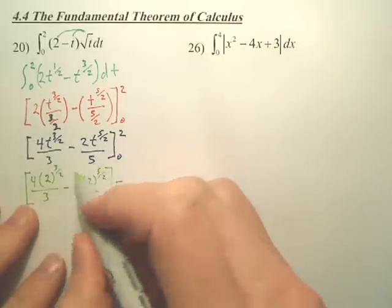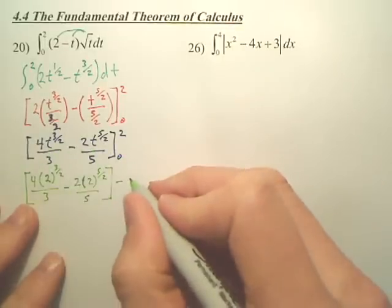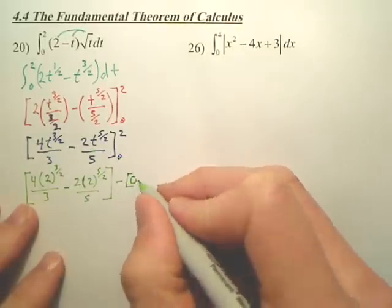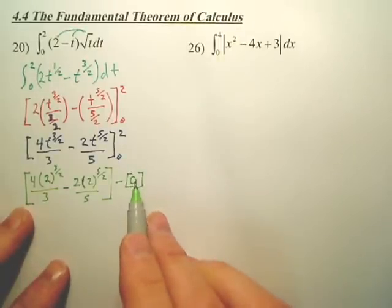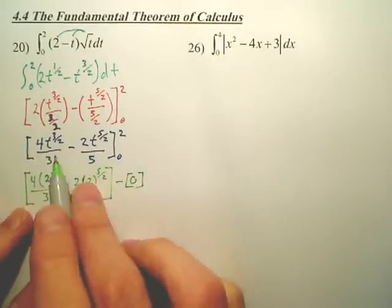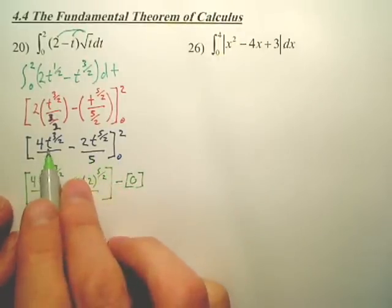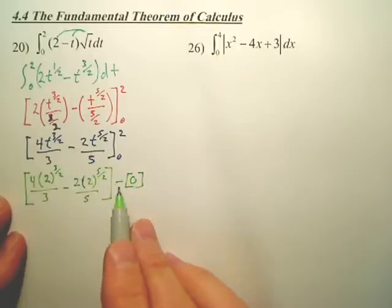Do you understand this is simply going to be 0? When I plug in 0 to both of these, plug in 0 here, gone. Plug in 0 here, gone. 0.